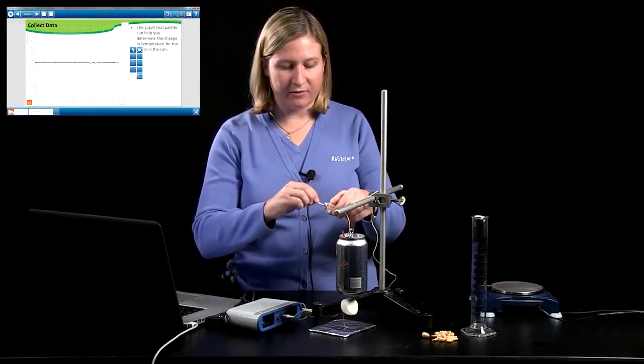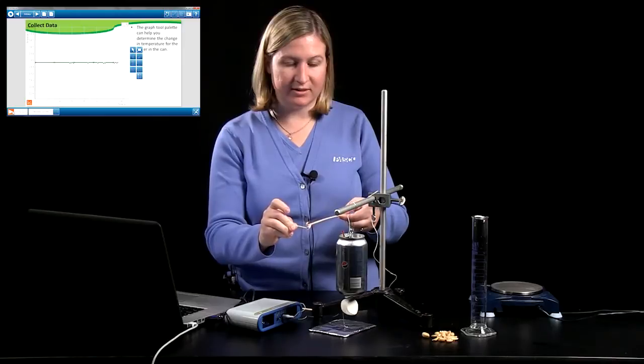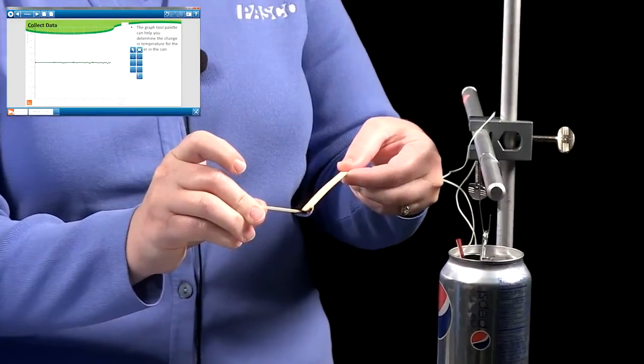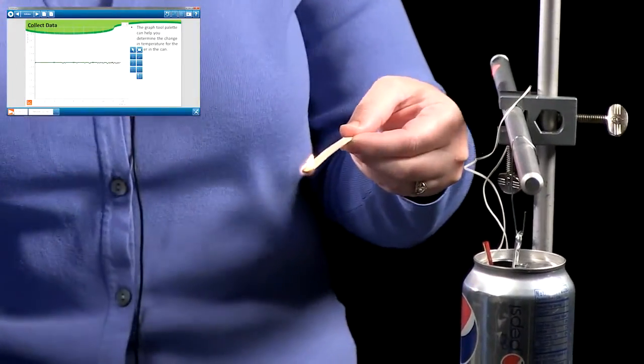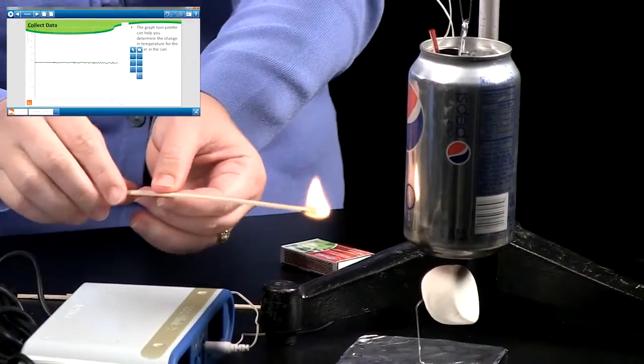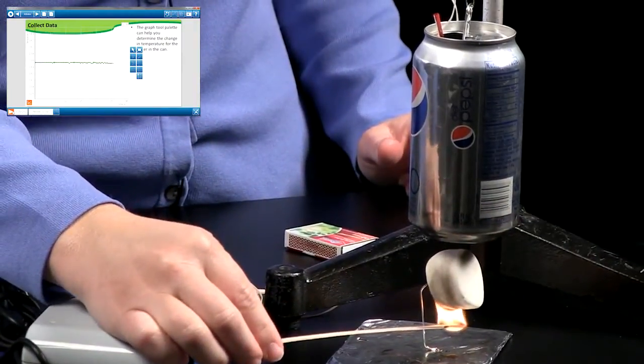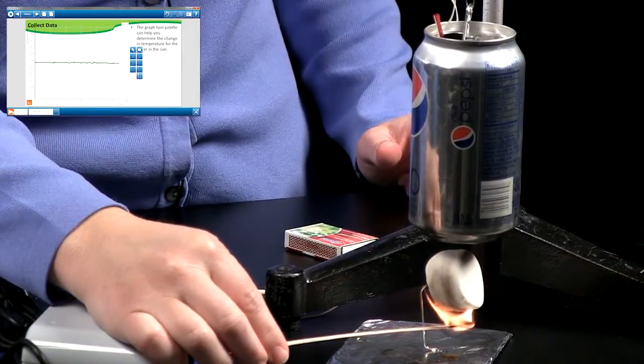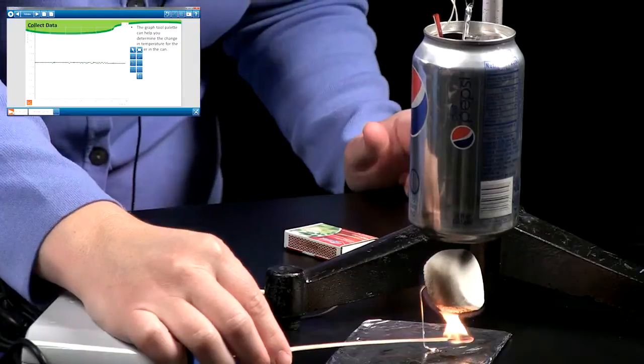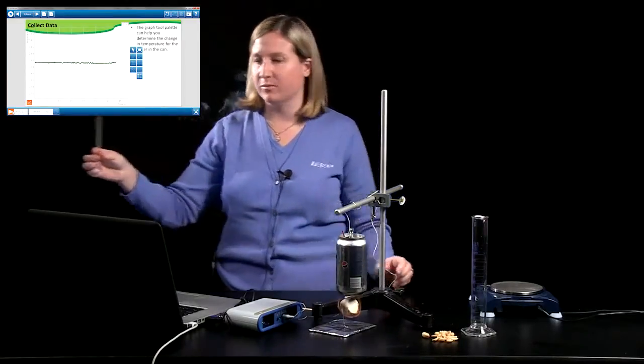Now I'm going to light the food and use a match to light a long wooden splint. This will help you conserve matches. When students try to light the food with a match, they often burn their fingers or drop the match. So if you light a wooden splint, the students can keep their hands well away from the flame.